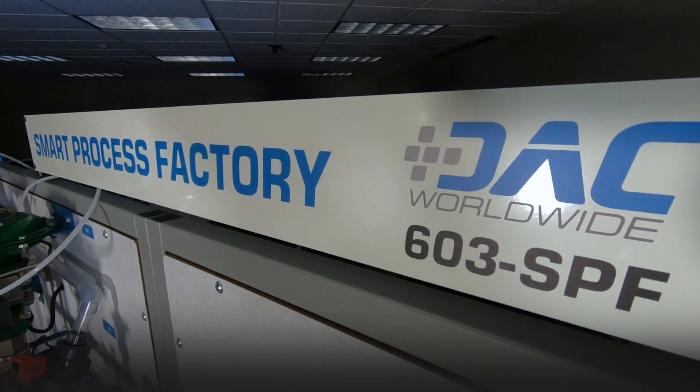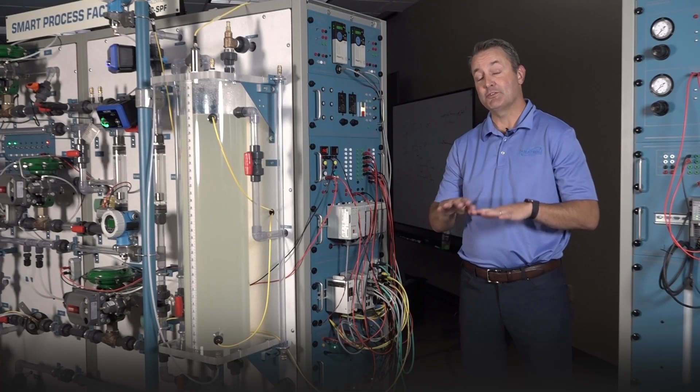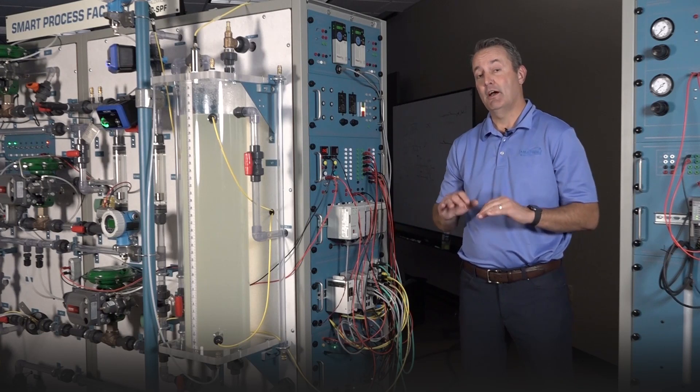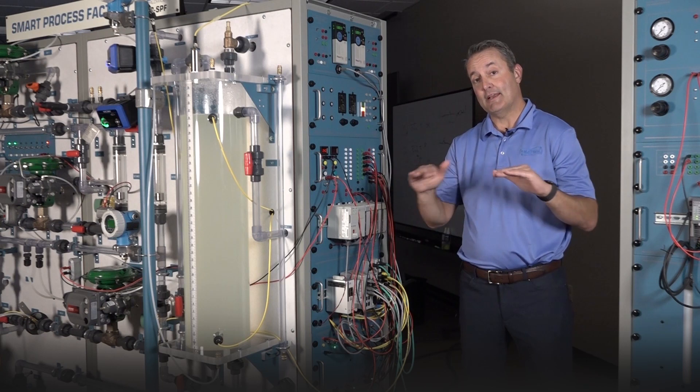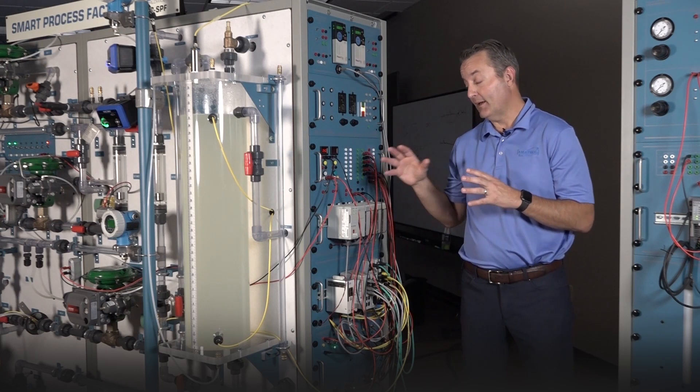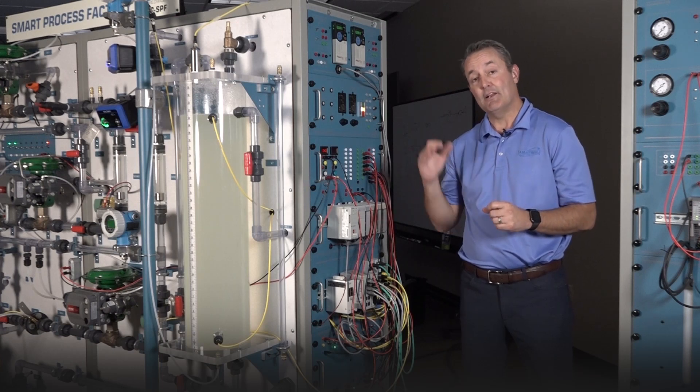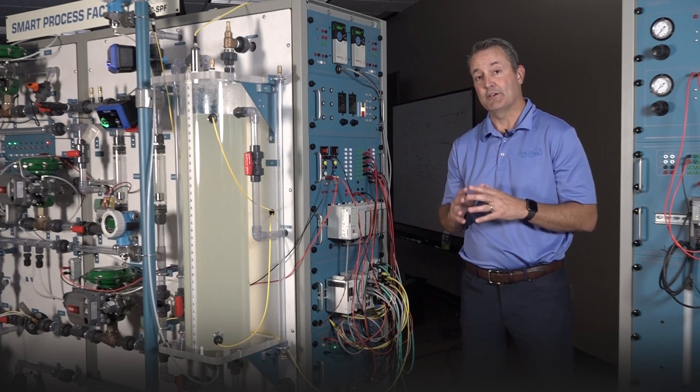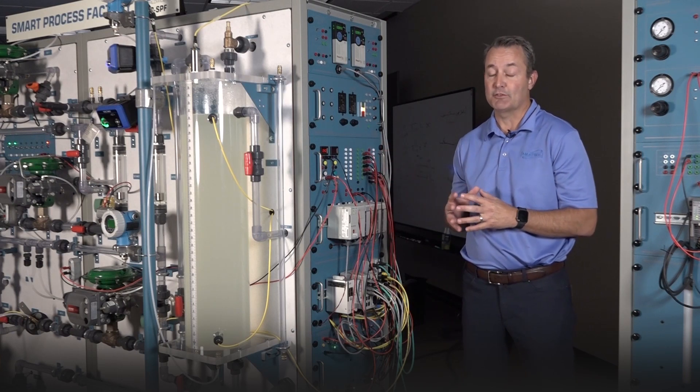The 603 Smart Process Factory is really designed to train on multiple levels. So we can train operators on basic operation of this factory. We can train technicians in troubleshooting the controls features of this smart process plant. But then also we can train the engineers in the high level controls and distributed control systems that this offers.